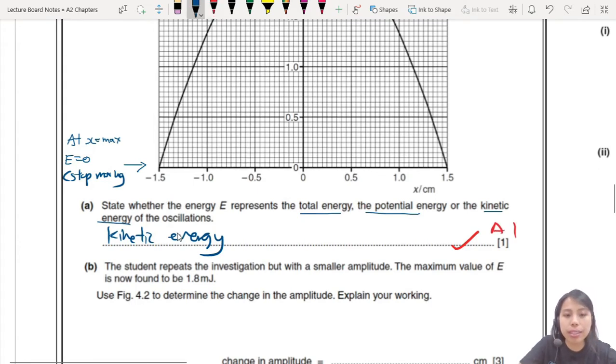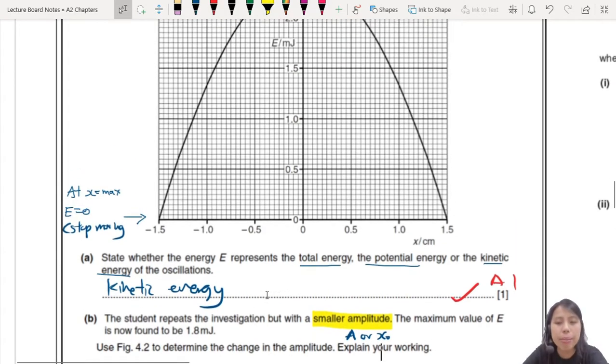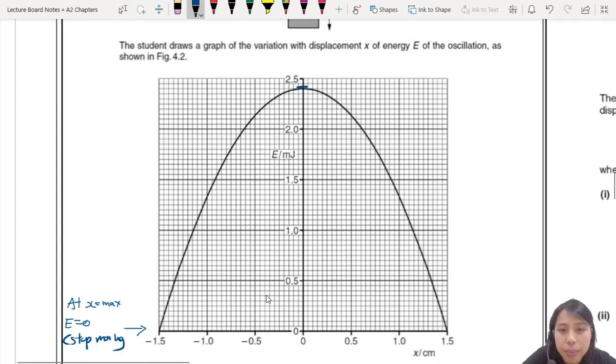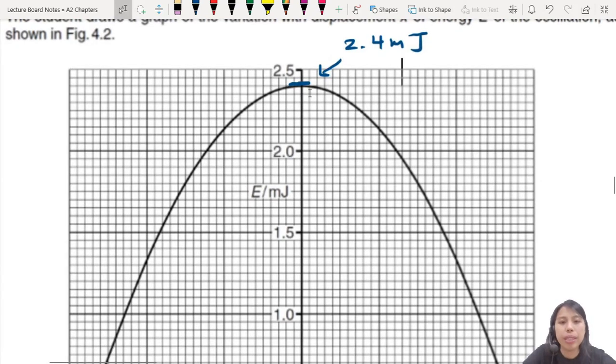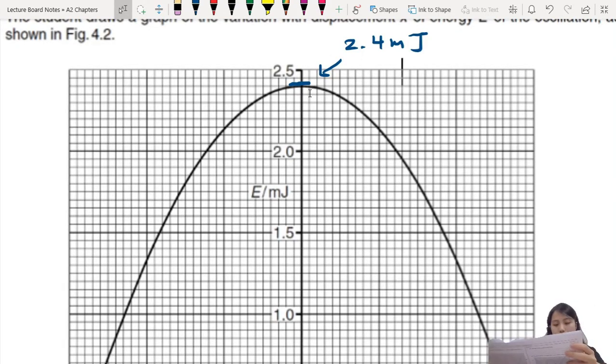Next, the student repeats the investigation, but with a smaller amplitude. So A has decreased. The maximum value is now found to be 1.8 millijoules. So what does that mean? So whatever this top value is, originally it is 2.4 millijoules, looks like it. But now we have decreased to 1.8 millijoules. So somehow you have dropped down to here. So the top of this curve has gone lower.